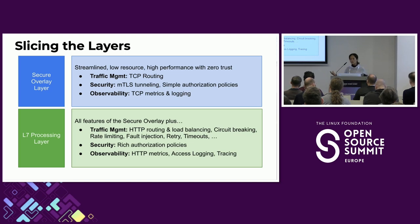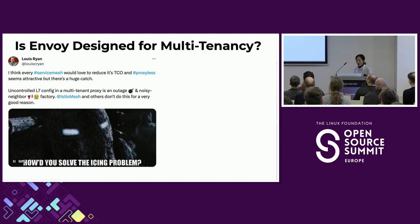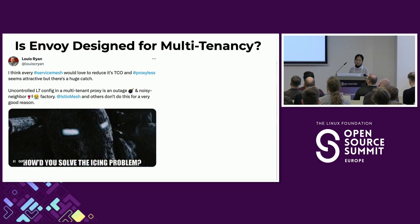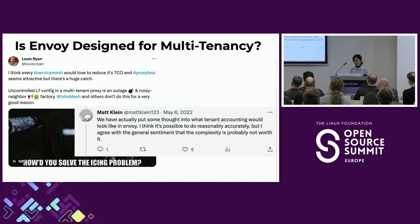Istio Ambient slices the mesh function into two layers: the secure overlay provided by the Zero Trust Tunnel (the node proxy), and the layer 7 processing layer provided by the waypoint proxy — also Envoy-based, same as the sidecar. With sidecar, you can't say 'I only need mutual TLS, I don't care about layer 7' — you still have to deploy the sidecar and expose yourself to all potential Envoy layer 7 CVEs. With Ambient, most apps can use just mutual TLS at layer 4, while only some need the layer 7 processing layer. Envoy is not designed for multi-tenancy, and Ahmed Klein, the founder of Envoy, weighed in on that topic too.